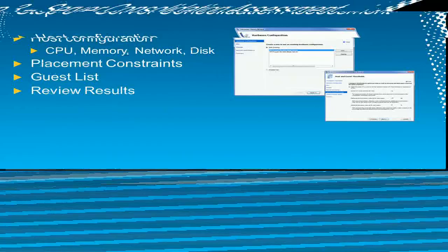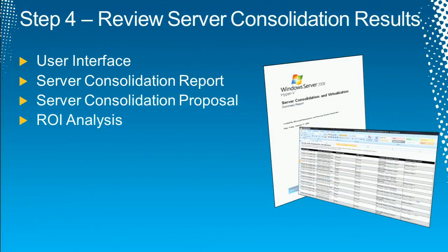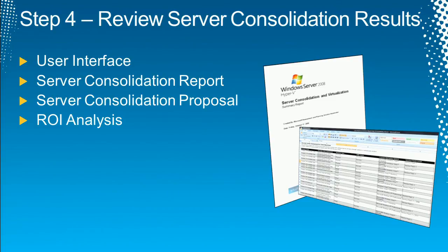For ROI calculation, MAP has worked with a company called Alineon, which developed a TCO calculator to give an idea of cost savings and benefits of virtualization. There's a link in MAP — it's an optional fifth step that launches the calculator. MAP also generates an XML file along with the reports and Word document, which you can input into that TCO calculator tool.